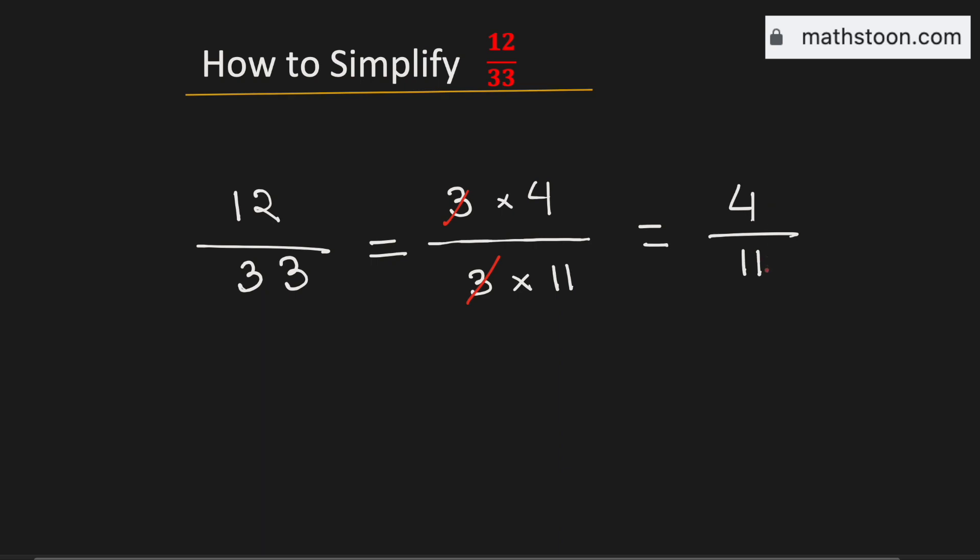Therefore 4 over 11 is the simplified reduced form of the fraction 12 by 33. And this is our final answer. Thanks for watching.